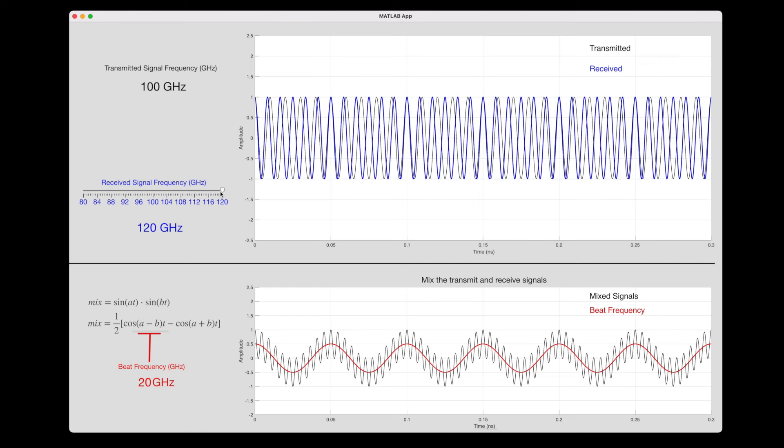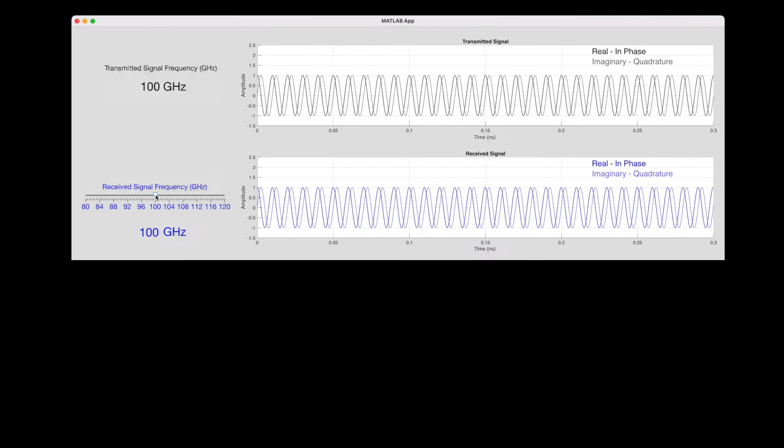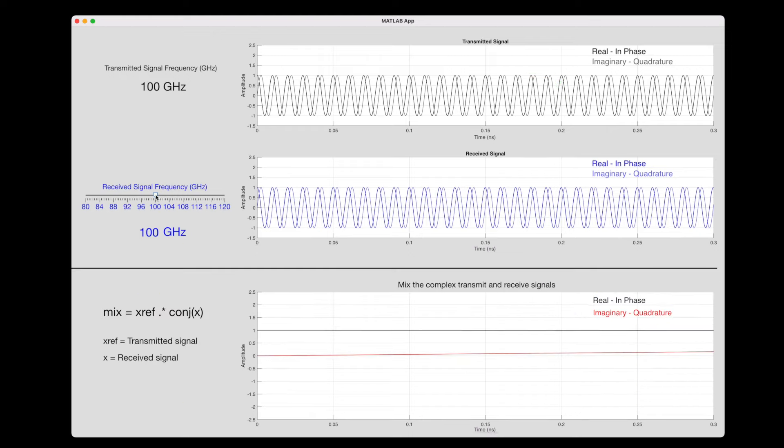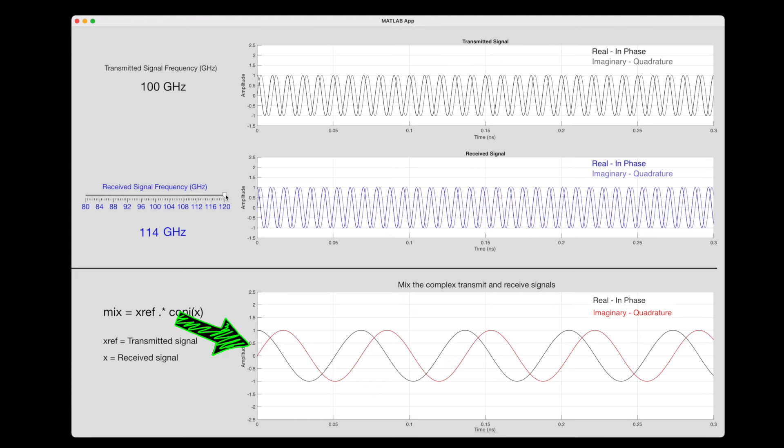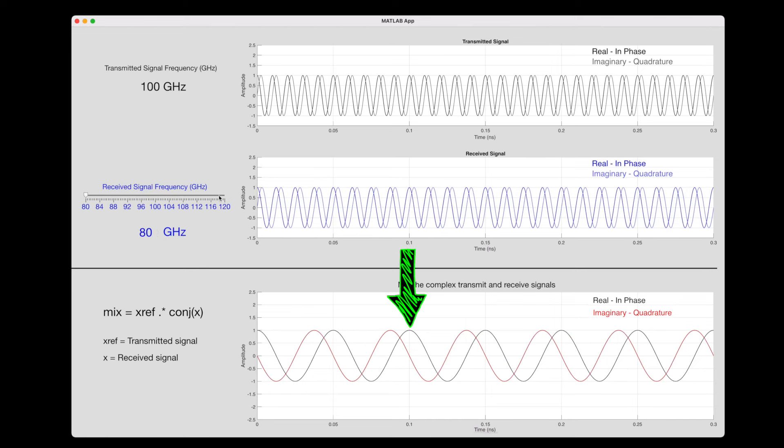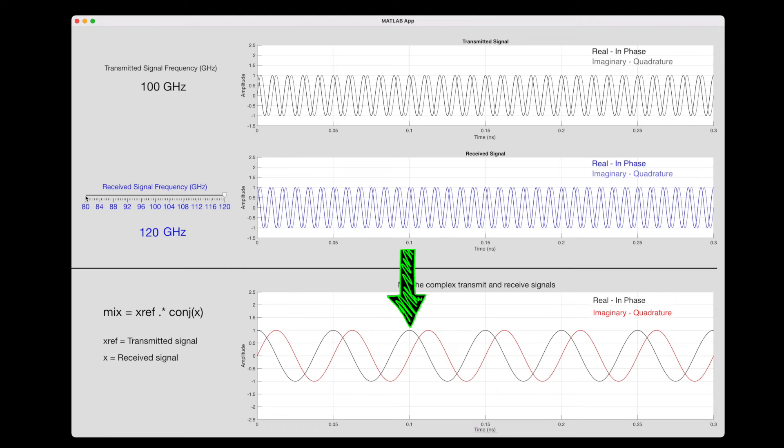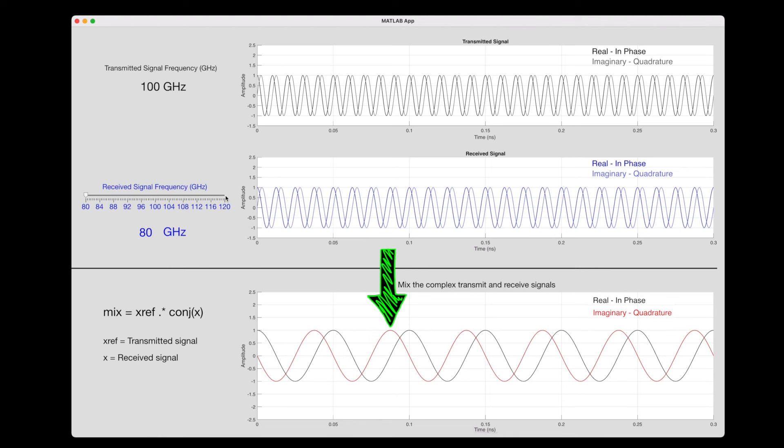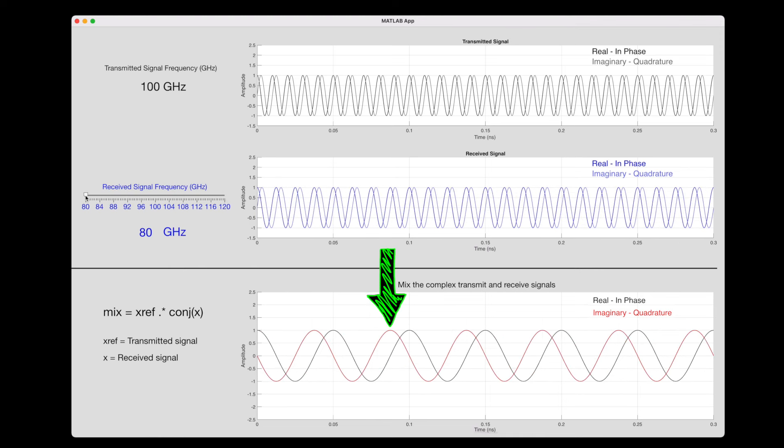But this is where radar systems with complex stages come into play. Imagine that the radar sends out two orthogonal signals that are separated by 90 degrees of phase, so-called IQ signals. The IQ comes from the fact that the real component is called in-phase, and the imaginary component is called quadrature. By generating these complex signals, we can now determine the direction of the object. When we mix the transmit and receive signals, we get another complex signal where both the in-phase and quadrature components oscillate at the beat frequency. But in addition to that, notice that when I toggle between 80 gigahertz and 120 gigahertz, the in-phase component doesn't change, just like we saw before. But the quadrature component does move.